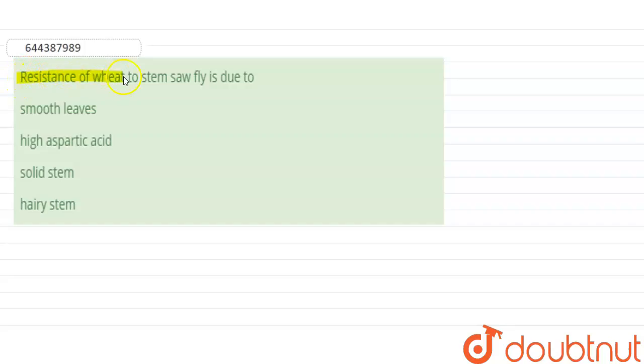So the question is: resistance of wheat to stem sawfly is due to. Options are smooth leaves, high aspartic acid, solid stem, and hairy stem.